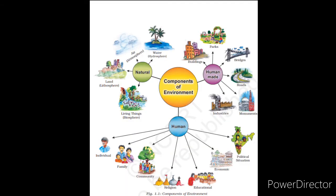Now, see the diagram carefully given in page number 2 — Components of Environment. There are mainly three components of environment. The first is natural environment. Those components which are already present in our nature are known as natural environment. These are of four types.